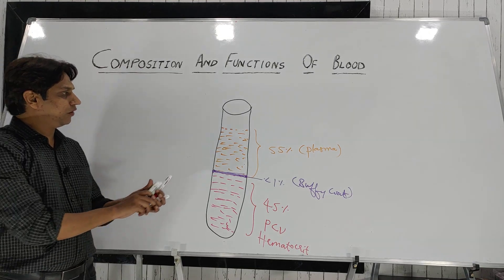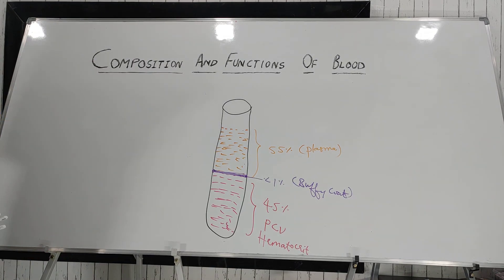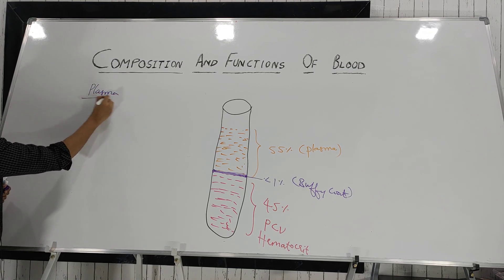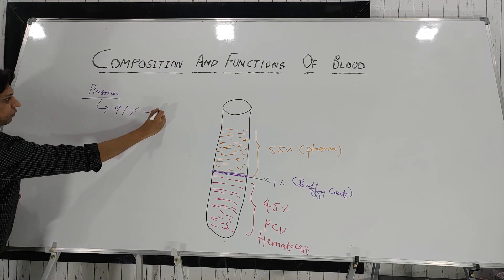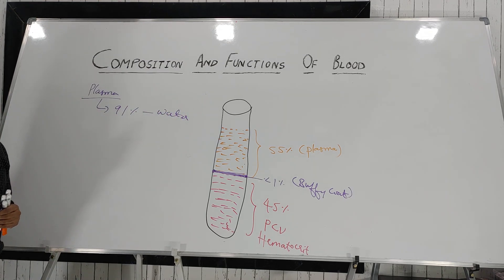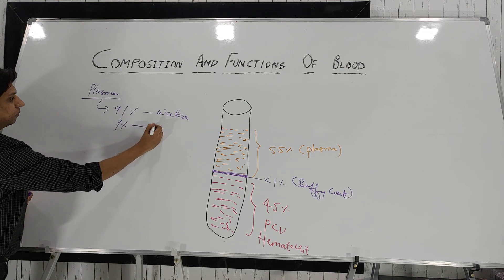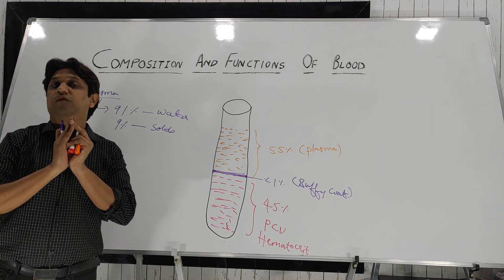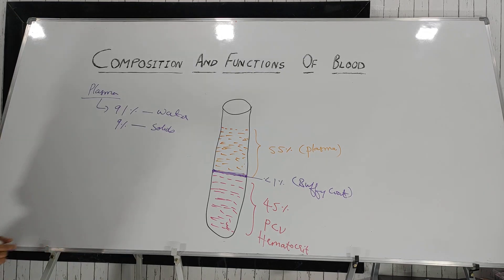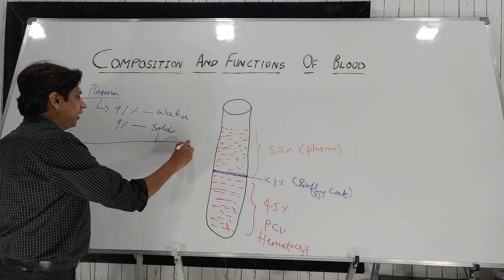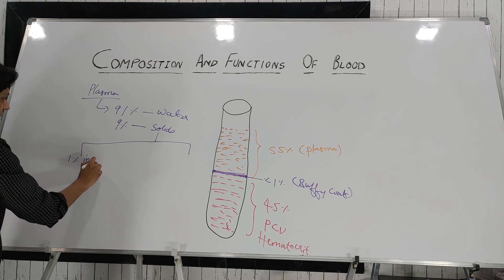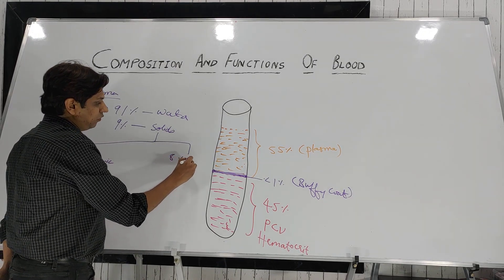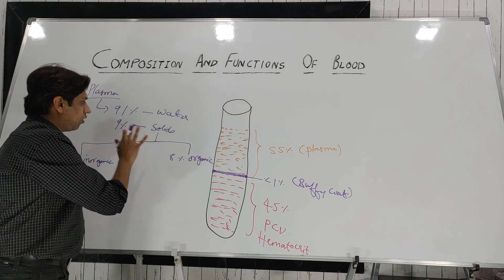Now let's discuss the composition of plasma. Plasma is basically the fluid portion. 91% of plasma is made up of water, and 9% of plasma is made up of solids. Out of this 9% solids, 1% consists of inorganic substances, whereas 8% constitutes organic substances.